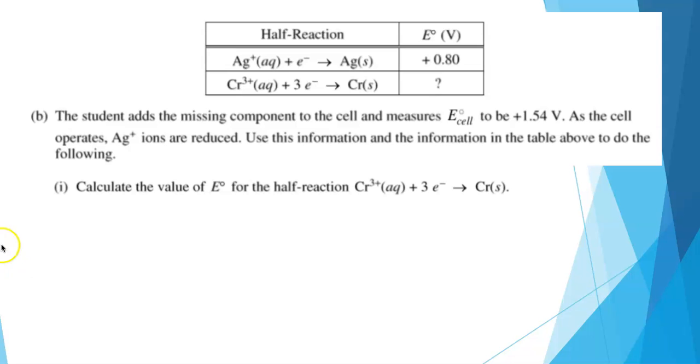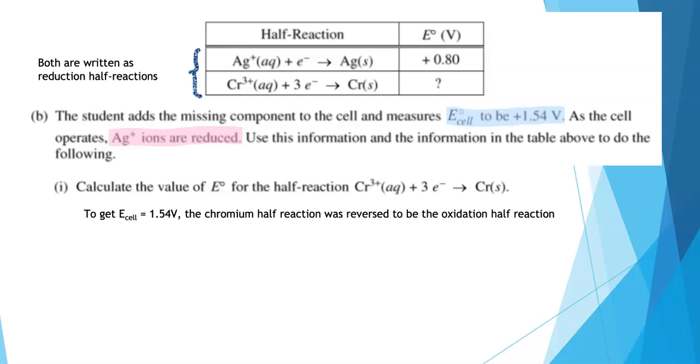Now we need to think carefully as we work through this. We're told that the silver ions are reduced, and that means the half reaction involving Ag+ to Ag will stay as written. But both of the reactions we're given are written as reductions, and we can't have both species undergoing reduction in a redox reaction. That means the chromium half reaction has to be flipped or reversed to get a cell voltage of 1.54 volts. In other words, we have to oxidize chromium metal to make Cr³⁺ ions.